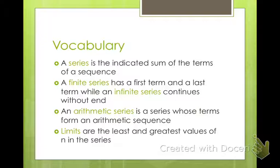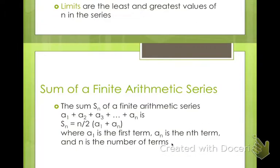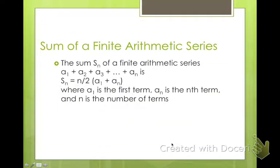A new word: limits are the least and greatest values of n in this series. So our first term and our last term, our greatest value. You're going to want to know this equation. To find the sum of a finite arithmetic series, you have S sub n, the sum of the terms, is n, your number of terms, divided by 2 times the quantity a1, your first term, plus a sub n, your last term. Make sure you know that formula.